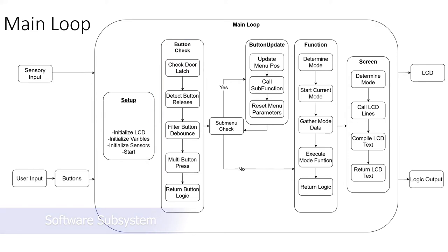If a sub-menu is detected to be going into or currently in one, a button update is ran, updating the sub-menu allowing the user to cycle through the menu or calling a sub-function. If a sub-function is called or the sub-menu is exited, that function is then ran. This is determined by the sub-menu function ran or the mode that the system is currently in.